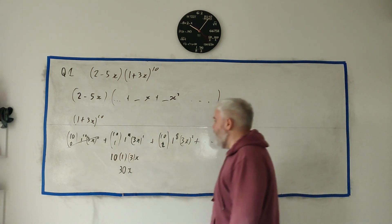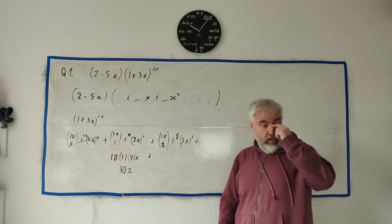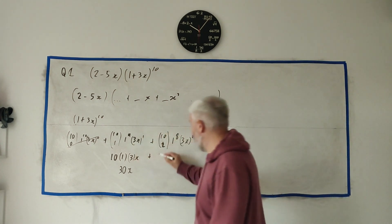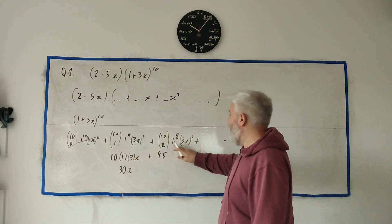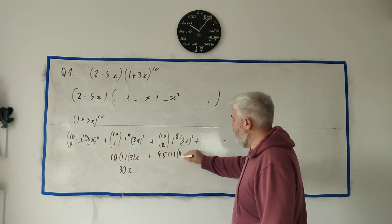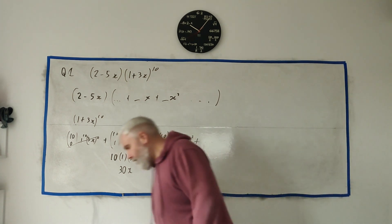And the next one is 10 choose 2. I do need to use a calculator for that. It comes out as 45. And 1 to the power of 8 is 1. 3 squared is 9, and x squared is x squared. And cleaning that up: 9 times 45 is 405 x squared.